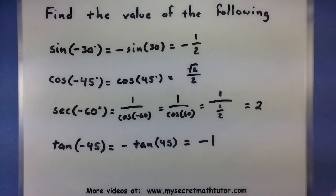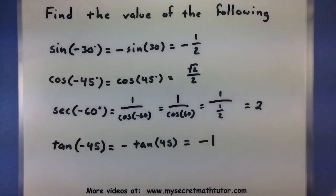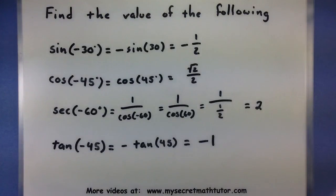All you have to remember is the even and odd properties for sine and cosine and how they're related to all of the rest of the trigonometric functions. Then you can easily figure out the value of your negative angles.